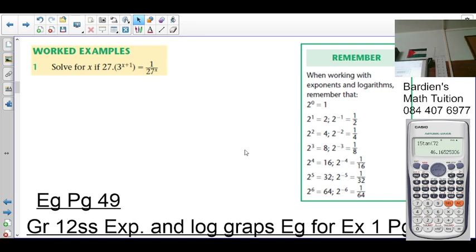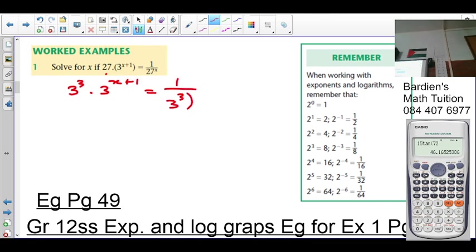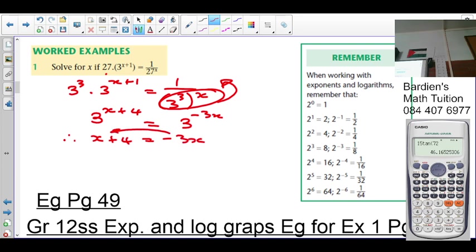In your exponential equations, we want to make the bases the same for the exponents to be equal. So 27 can be broken up into 3 cubed times 3 to the x plus 1 equals 1 over 3 cubed raised to the exponent x. You've got 3 to the 3 times 3 to the x plus 1. When the bases are the same and they're multiplying, add the exponents. So 3 plus x plus 1 is x plus 4 equals 3 to the minus 3x. The bases are the same, therefore the exponents are equal. So x plus 4 equals negative 3x. 4x equals minus 4, x is then equal to negative 1.